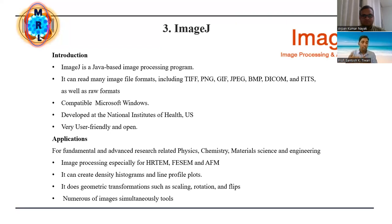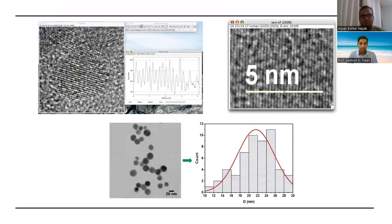Using ImageJ, you can determine particle size, surface roughness, surface smoothness, uniformity, and the distribution of different types of particles. It also provides geometrical transformations — scaling, rotation, and flipping. Without this software, I cannot believe anyone can easily process FESEM, TEM, or AFM images and give a good interpretation. For example, from a TEM image of a particle, you can get average size, histogram, and size distribution — simply by using ImageJ.